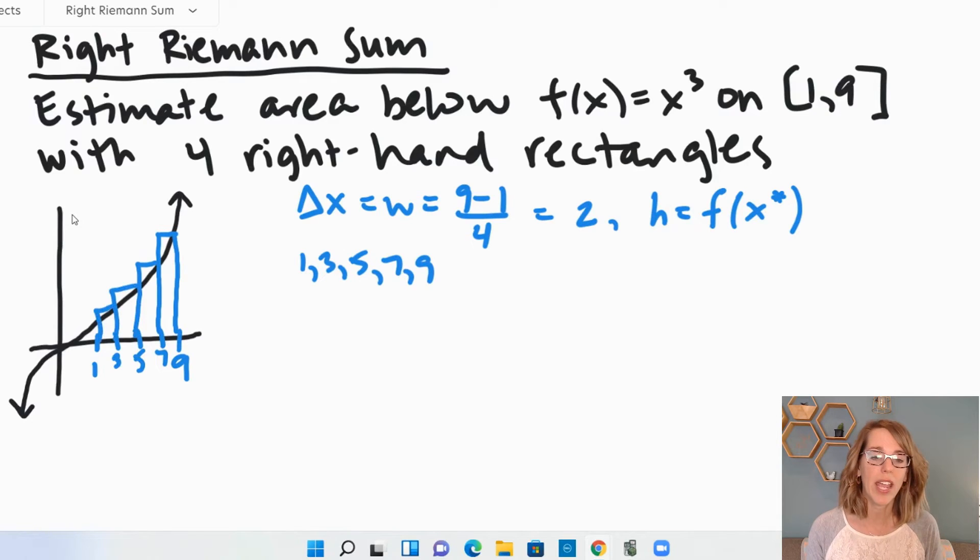So I can see that those heights turn out to be f of 3, 5, 7, and 9. So as I put this together, I'm going to figure out the area under each of these rectangles and then add them up. So my area is approximately the sum of the height times the width for each of these rectangles.